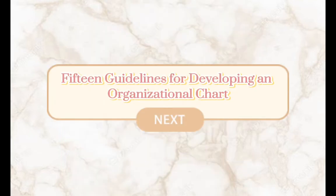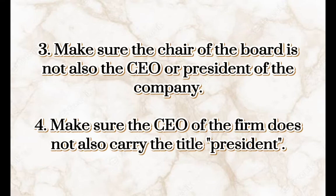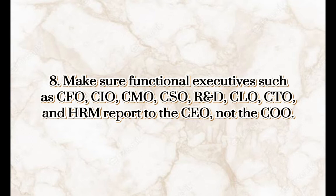15 guidelines for developing an organizational chart. One: instead of 'chairman of the board,' use 'chairperson of the board.' Two: make sure the board of directors reveals diversity in race, ethnicity, gender, and age. Three: make sure the chair of the board is not also the CEO or president of the company. Four: make sure the CEO does not also carry the title of president. Five: reserve the title president for the division heads of the firm. Six: make sure the firm has a COO. Seven: make sure only presidents of divisions report to the CEO. Eight: make sure functional executives such as CFO, CMO, CSO, CTO, and HRM report to the CEO.